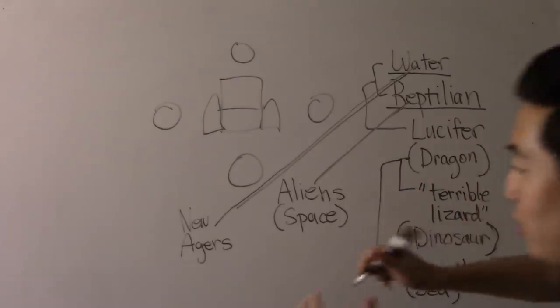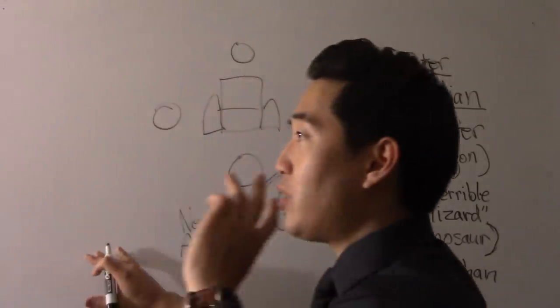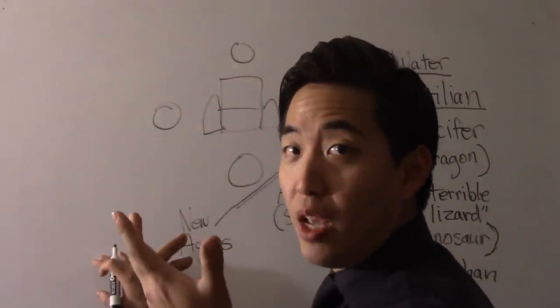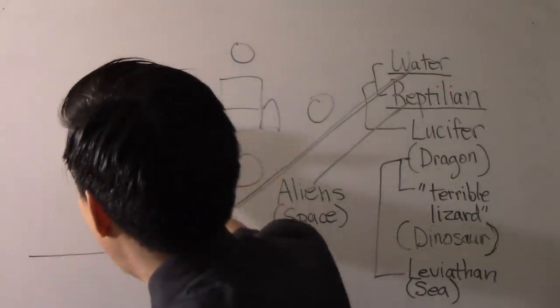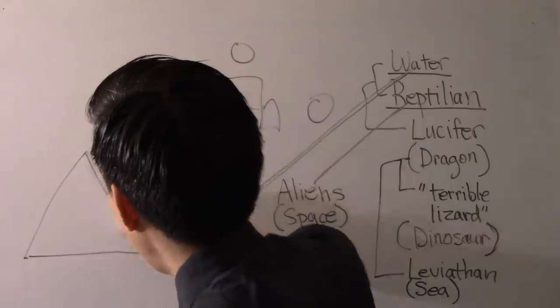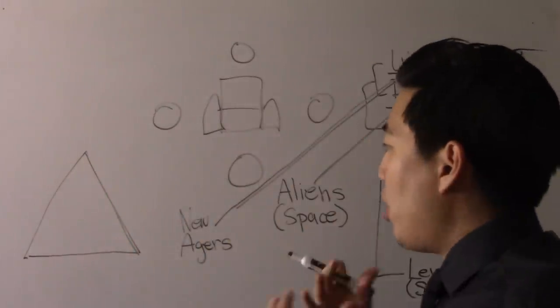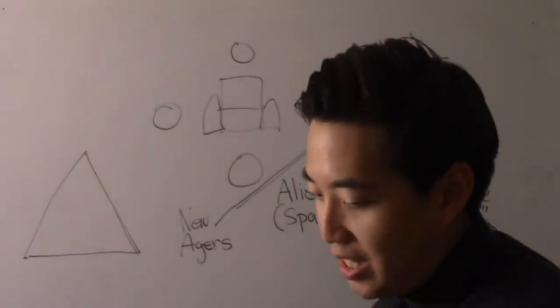But here's the thing that you've got to understand, is that Satan, he always wants to copycat God, right? Now Satan, what did he do? You notice that there were pyramids in Egypt, yes? People always were wondering who built the pyramids in Egypt.